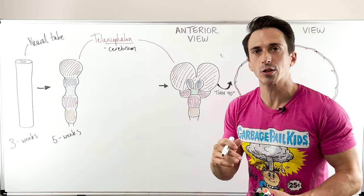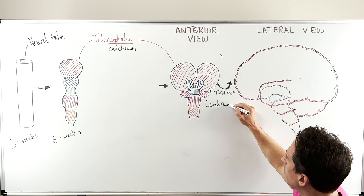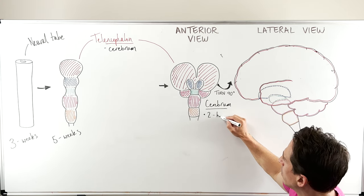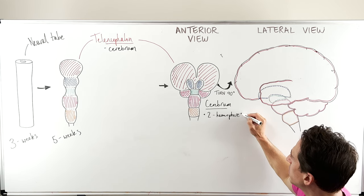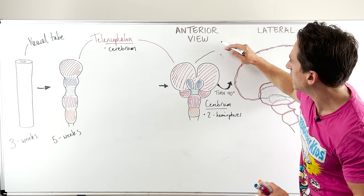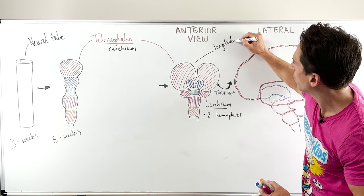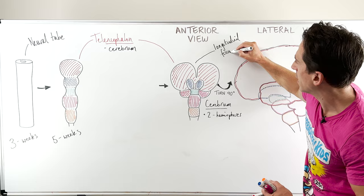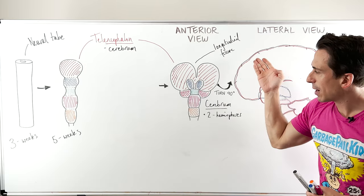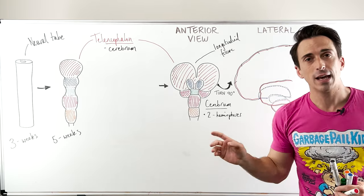Let's take a quick look at the cerebrum. The cerebrum is the largest part of the brain and is comprised of two hemispheres. The two hemispheres are actually separated out by what we call a fissure — a splitting down the middle — which we call the longitudinal fissure. The longitudinal fissure separates out the left and right hemispheres of the brain. Importantly, the left hemisphere controls what's happening on the right-hand side of the body and the right hemisphere controls what's happening on the left-hand side of the body.